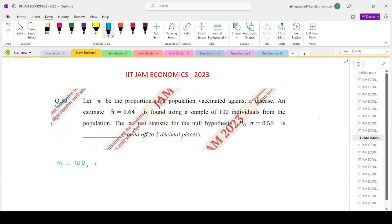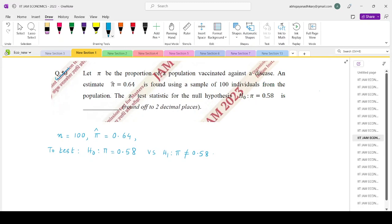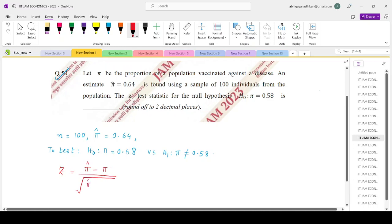N is equal to 100. The estimated proportion pi hat is equal to 0.64. And we want to test the hypothesis H0 pi equals 0.58 versus H1 pi is not equals to 0.58. The Z statistic if you recall is the estimated value minus the original value divided by the standard error. That is pi hat into 1 minus pi hat divided by N.